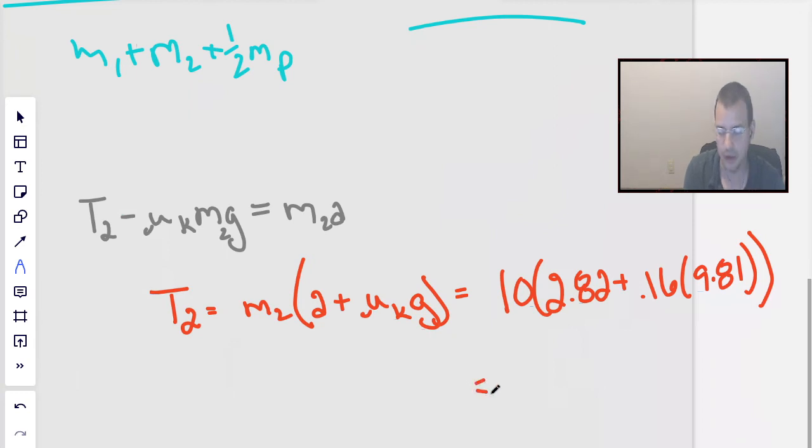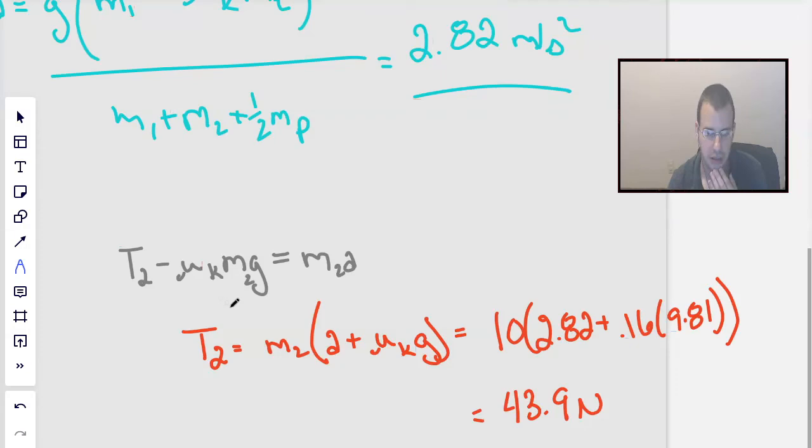I'm going to use my preferred calculator of Wolfram, but you can use your calculator of choice, probably TI-83 or some such. 2.82 plus 0.16 times 9.81. That seems reasonable. You get an answer of 43.9 Newtons. Yep, I'm good with that.